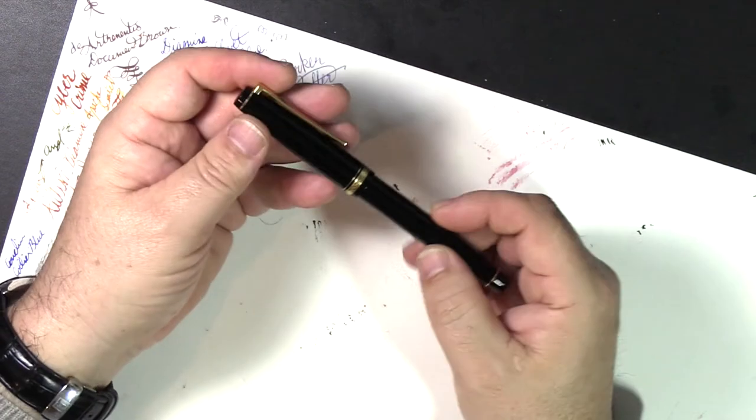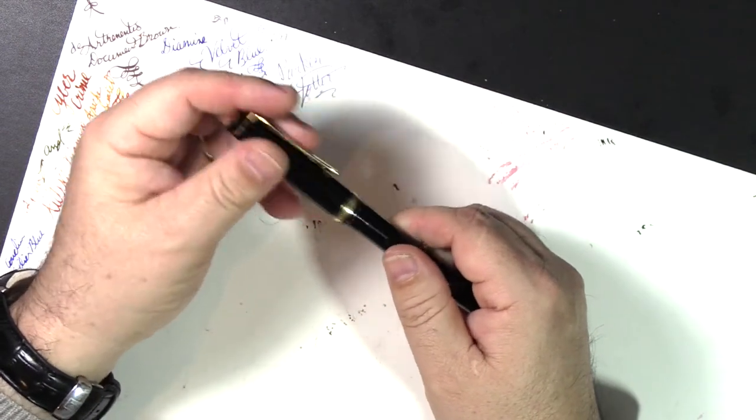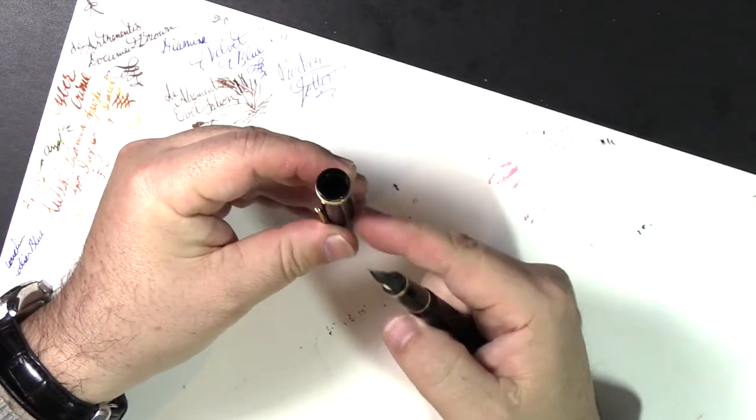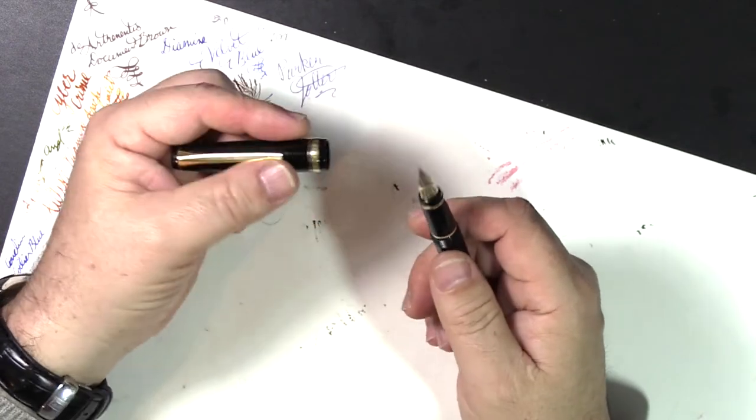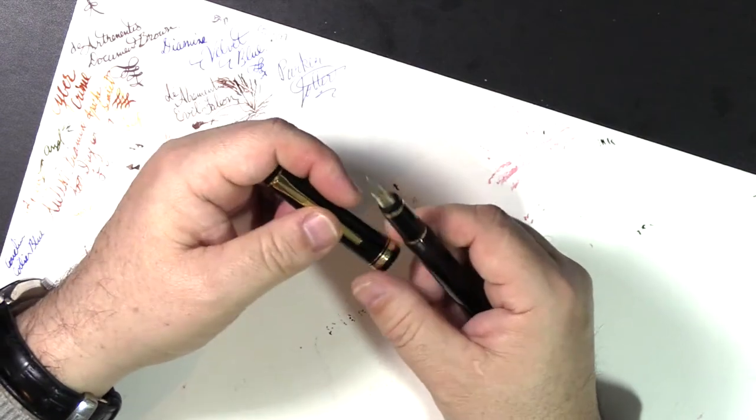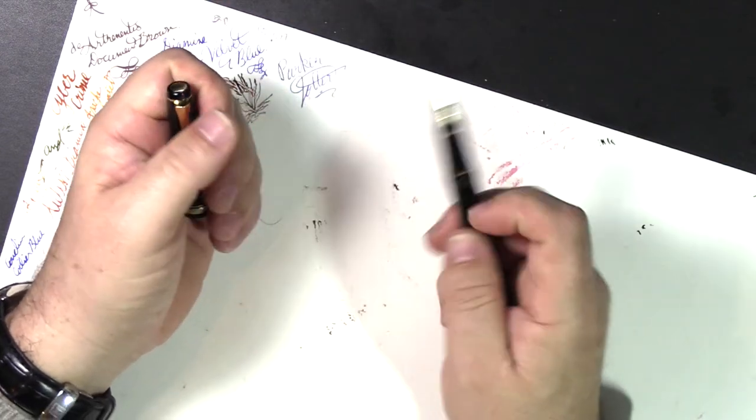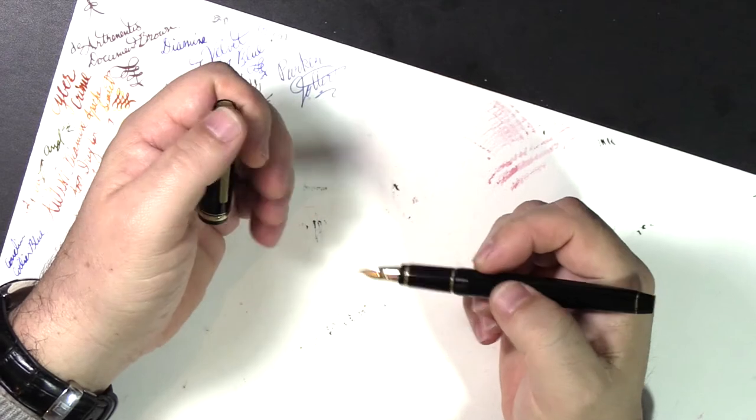One of the nice things about this pen is it has an inner liner inside the cap, and that inner liner really does seal this nib very well. When I have left this pen sitting for a long period of time, I don't get any hard starts with it. It will still write.